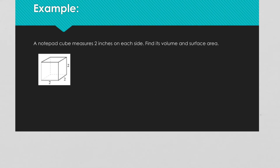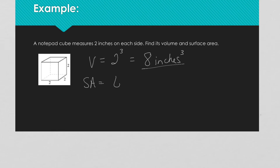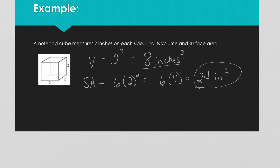This one's a lot like the last one. This time we have a notepad cube that measures 2 inches on each side. Our volume is 2 cubed, which is 8 inches cubed. Our surface area is 6 times 2 squared — so 6 times 4 — which is 24 square inches.